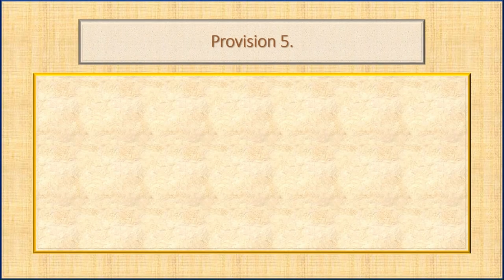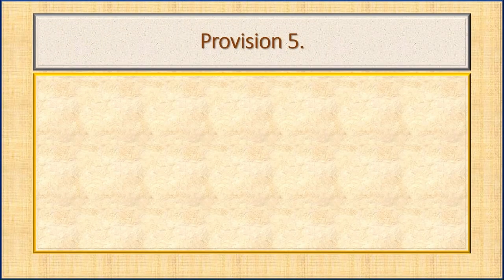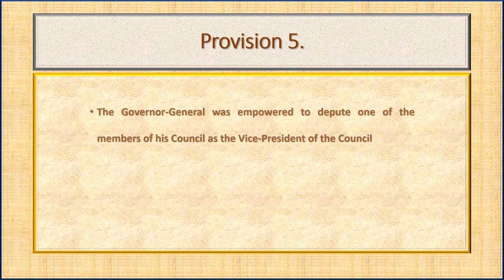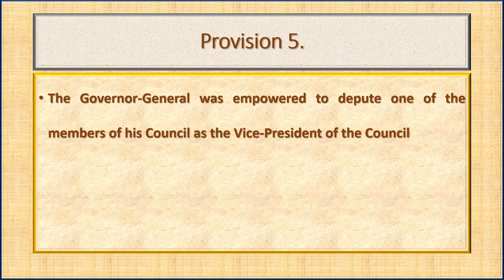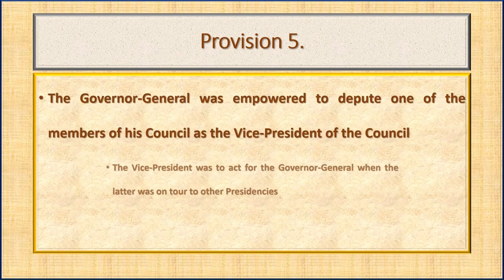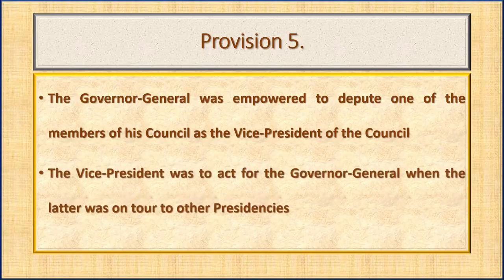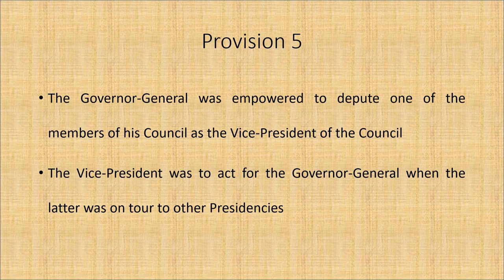As per Provision 5, the governor general was empowered to depute one of the members of his council as the vice president of the council. The vice president was to act for the governor general when the latter was on tour to other presidencies.